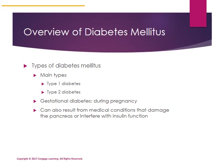The progression of diabetes mellitus results in kidney failure and contributes to heart disease. Diabetes mellitus can also result from medical conditions that damage the pancreas or interfere with insulin function — for example, cystic fibrosis.